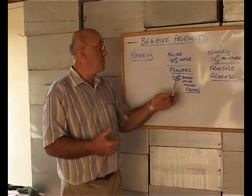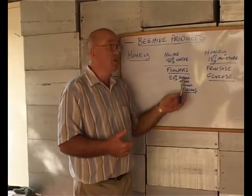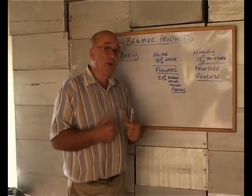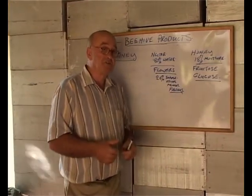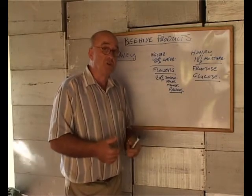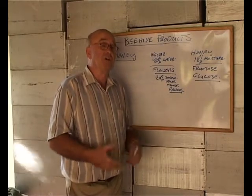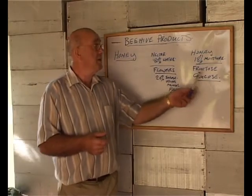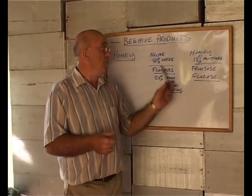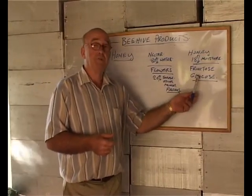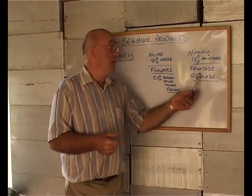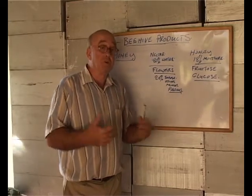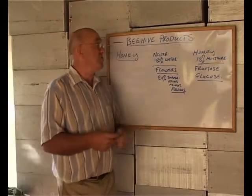If we were to eat sucrose, we would have to digest it ourselves — add the enzymes ourselves and turn it into glucose before we can gain energy. By eating honey, the bees have done the work for us. The honey's glucose and fructose will give humans instant energy.